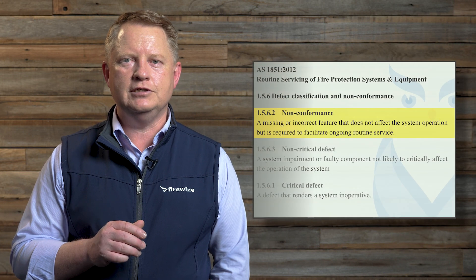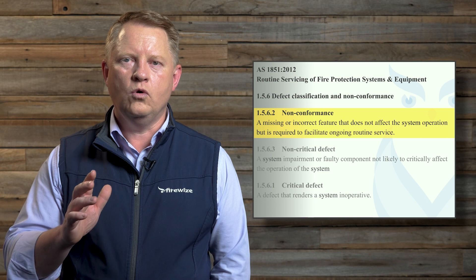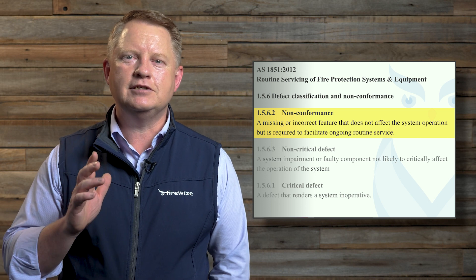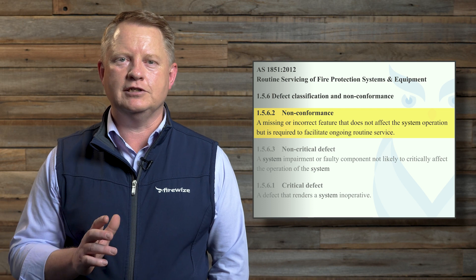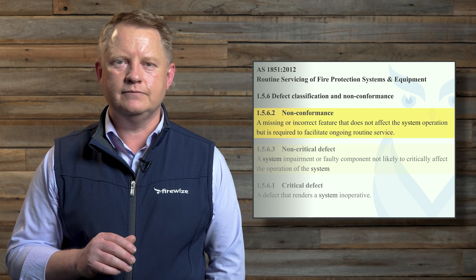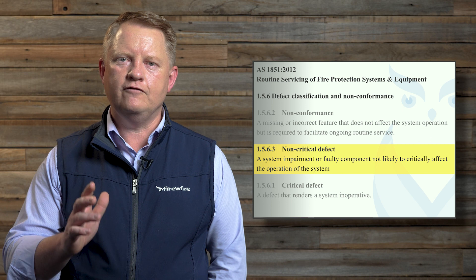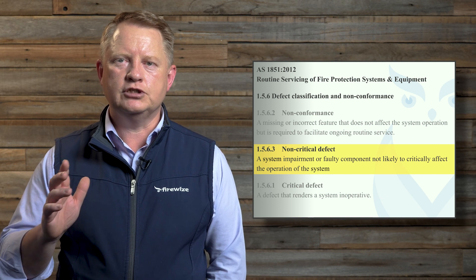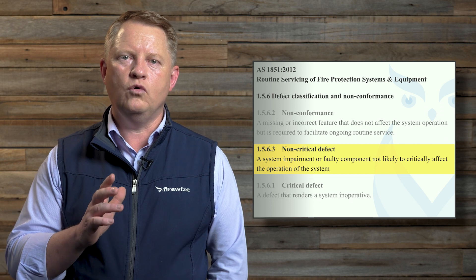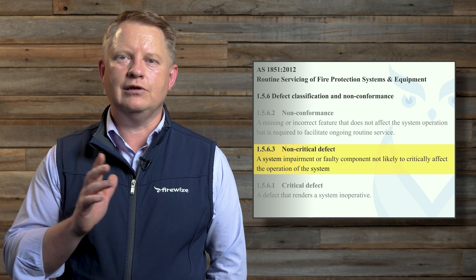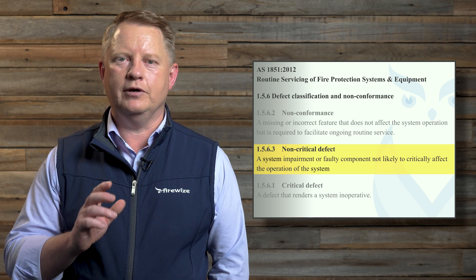In Clause 1.5.6.2 of AS1851 2012, a non-conformance is defined as missing information or an incorrect feature that does not affect the system operation but is required to facilitate ongoing routine service. Clause 1.5.6.3 describes a non-critical defect as a system impairment or faulty component not likely to critically affect the operation of the system.